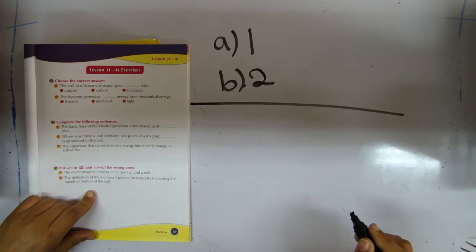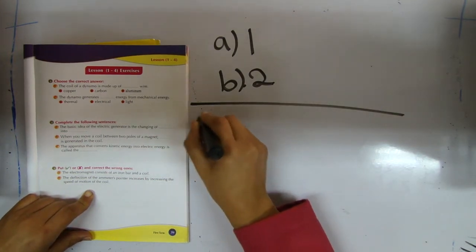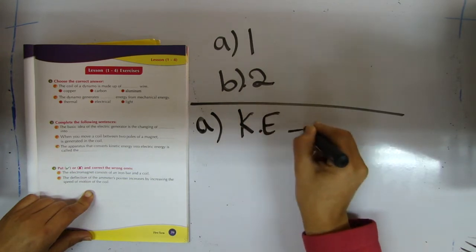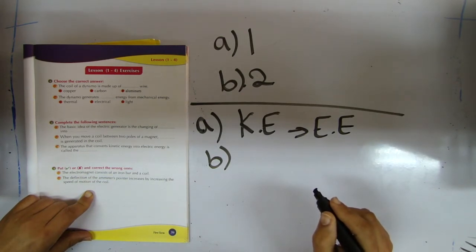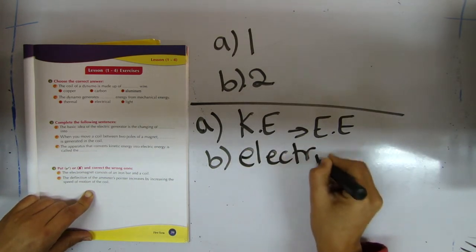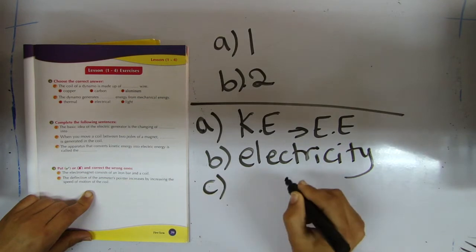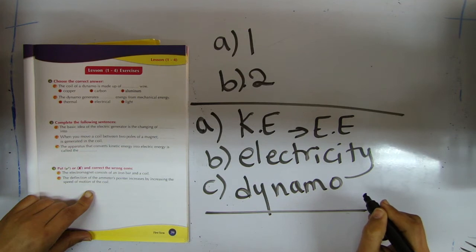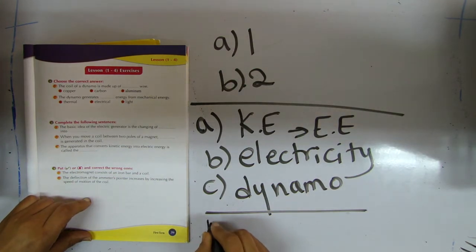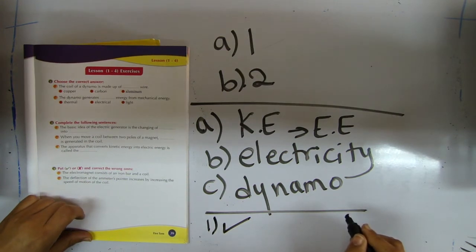Complete the following sentence. The basic idea of the electric generator is changing kinetic energy into electric energy. Number two: when you move a coil between two poles of a magnet, electricity is generated in the coil. Number three: the part that converts kinetic energy into electric energy is called a dynamo. Question number three: put right or wrong. Number one: the electromagnet consists of an iron core and a coil. Right. Number two: the deflection of the meter pointer increases by increasing the speed of motion of the coil. Correct.